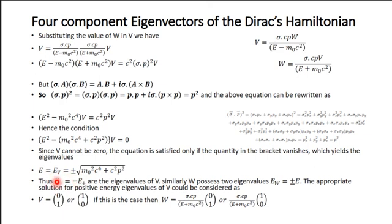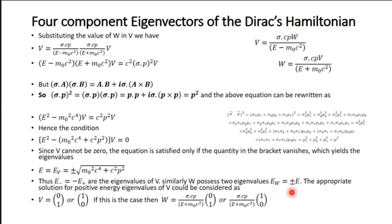There are two values of E-V: positive and negative. E-plus and E-minus are the eigenvalues of V. Similarly, W possesses two eigenvalues E-W equals plus or minus E.